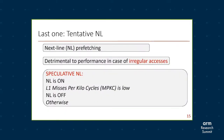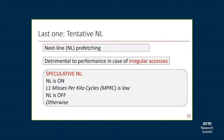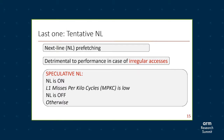Finally, if we fail to classify an IP into one of those three previous classes, we use the next-line prefetcher — but instead of using next-line all the time, we call it a tentative next line, which is used only when the L1 misses per kilo cycle is low. Otherwise, we don't use the next-line prefetcher.